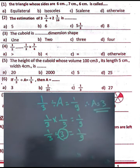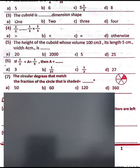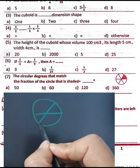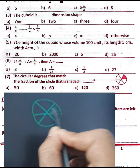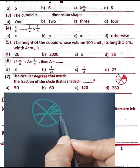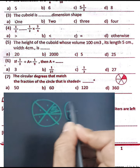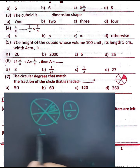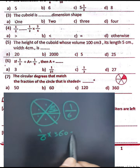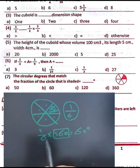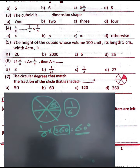Question number seven: find the circular degrees that match the fraction of the shaded part of the circle. The circle is divided into six equal parts and one part is shaded, so the fraction is one-sixth. To find the circular degrees: one-sixth times 360 degrees equals 360 divided by 6, which equals 60 degrees. The measure is 60 degrees.